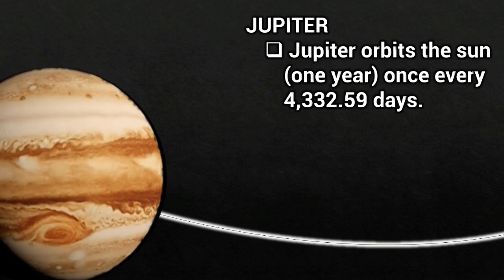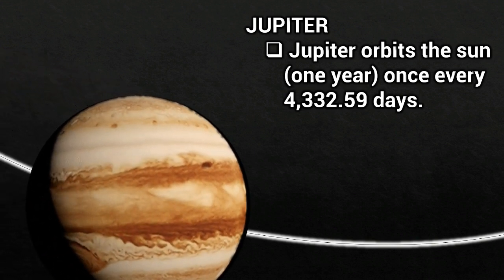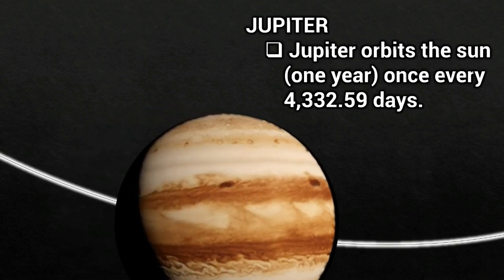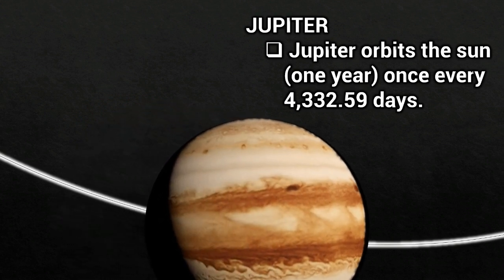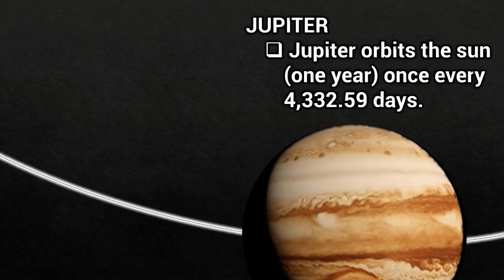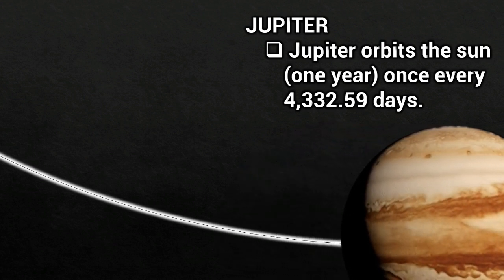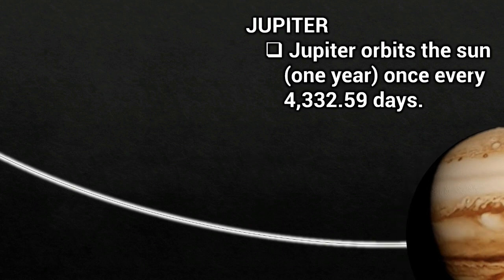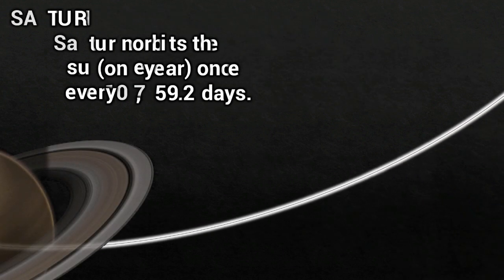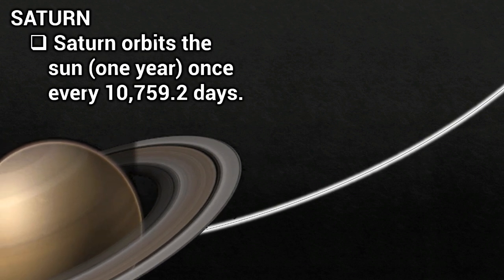Jupiter orbits the Sun once every 4,332.59 days.